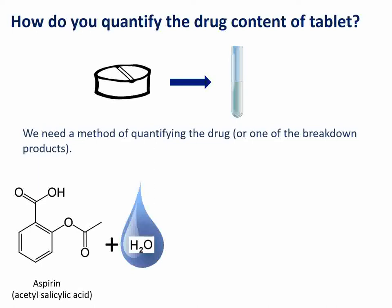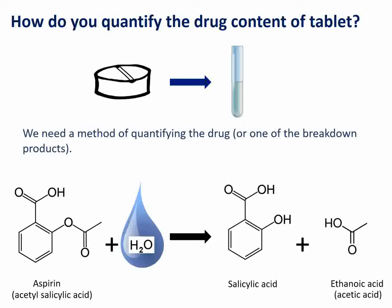Let's go back to the drug we were looking at in tutorial one — the ester drug, aspirin. We talked about how when water is added to aspirin you get hydrolysis, and the aspirin breaks down to two products: salicylic acid and ethanoic acid, also known as acetic acid. So if you want to quantify the amount of aspirin present, you can either develop a method which directly quantifies the aspirin, or alternatively look at a method which quantifies the formation of salicylic acid or ethanoic acid, and then by deduction work out the concentration of aspirin present.